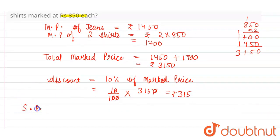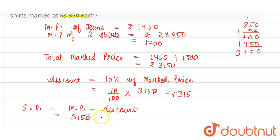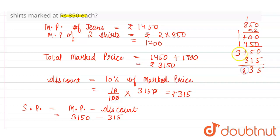What would the customer pay? The selling price is equal to marked price minus discount. The marked price is 3150 and the discount is rupees 315. So 3150 minus 315: 0 minus 5, borrow 1, gives 5; 4 minus 1 is 3; 11 minus 3 is 8; and we have taken a carry, so 2. The selling price is equal to rupees 2835, and this is the required answer.